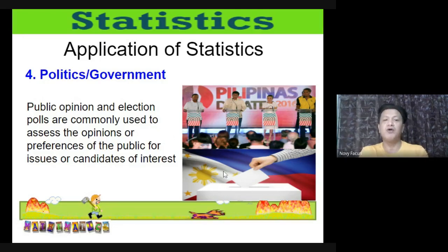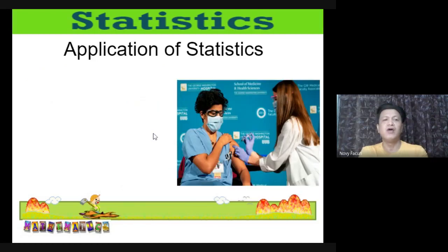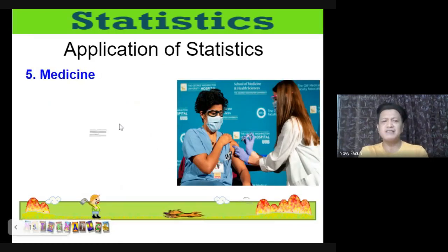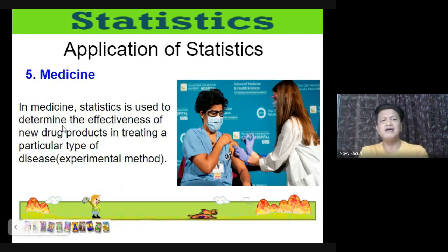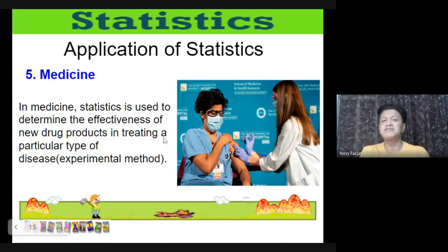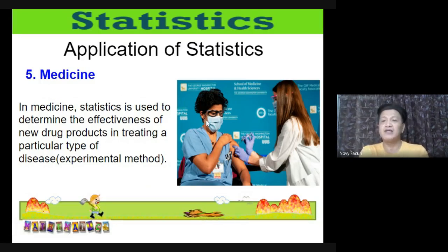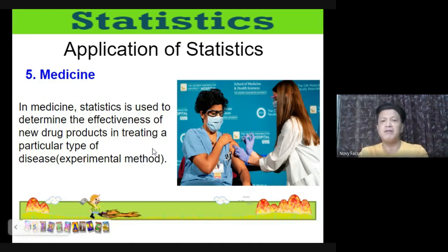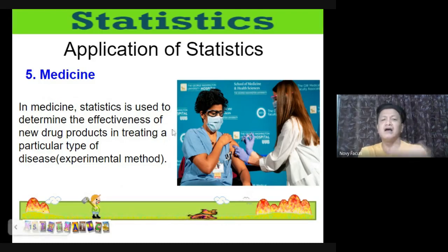In medicine, statistics is used to determine the effectiveness of new drug products in treating a particular type of disease. Experimental methods are used — for example, trying to solve problems like COVID-19 through experimentation.